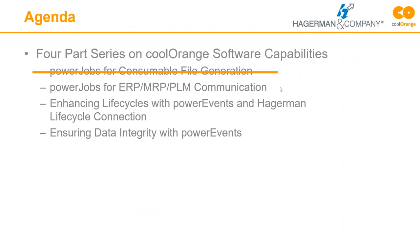Today's focus is on communicating with other business systems using Power Jobs. This is one-way communication. If you need bi-directional communication, you would ideally use something like Power Gate from Cool Orange, which allows incoming requests. The core of Power Gate is that if you need Vault to be updated with data from another system on demand, you need some sort of listener. Today's focus is really about pushing data to other systems from Vault.